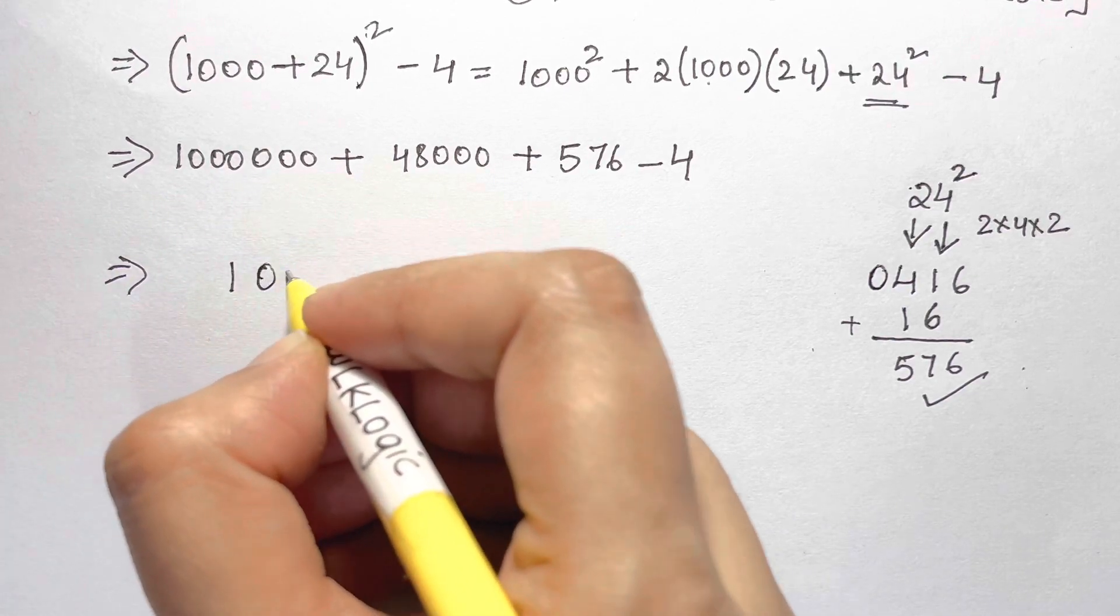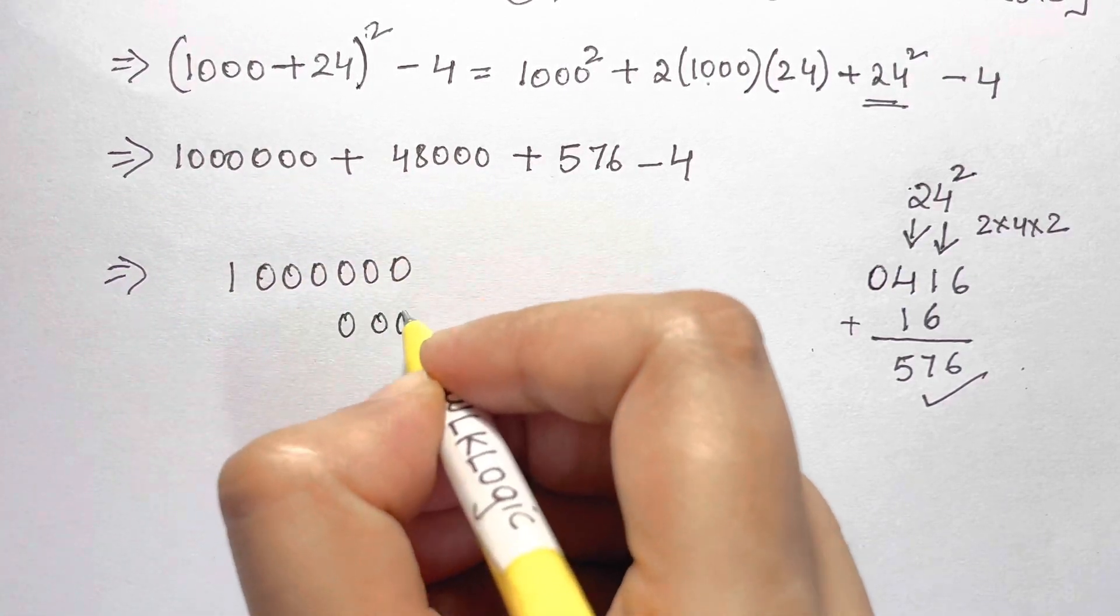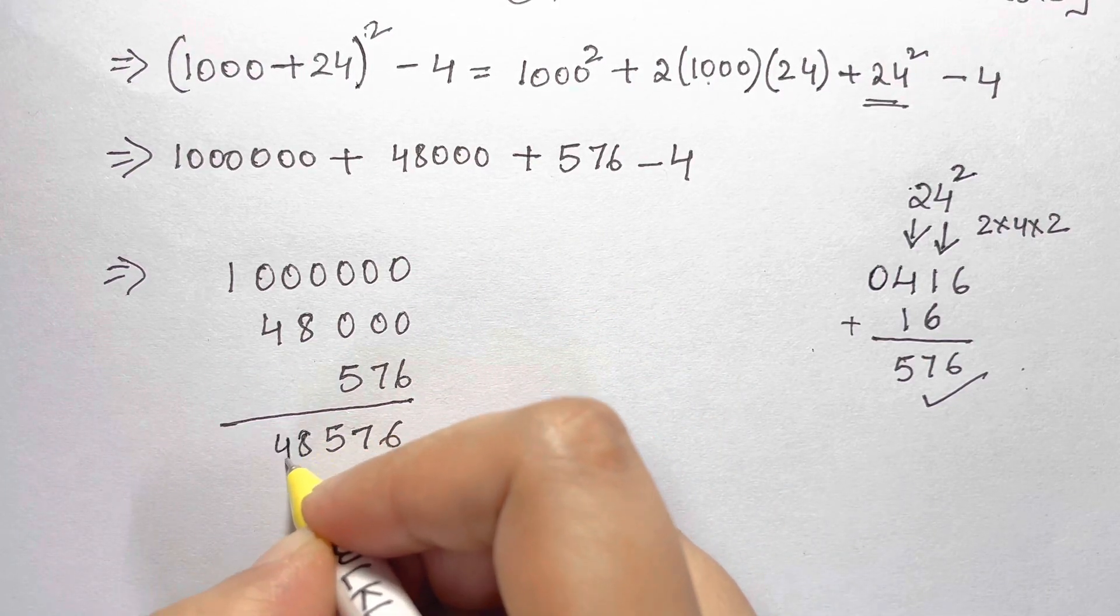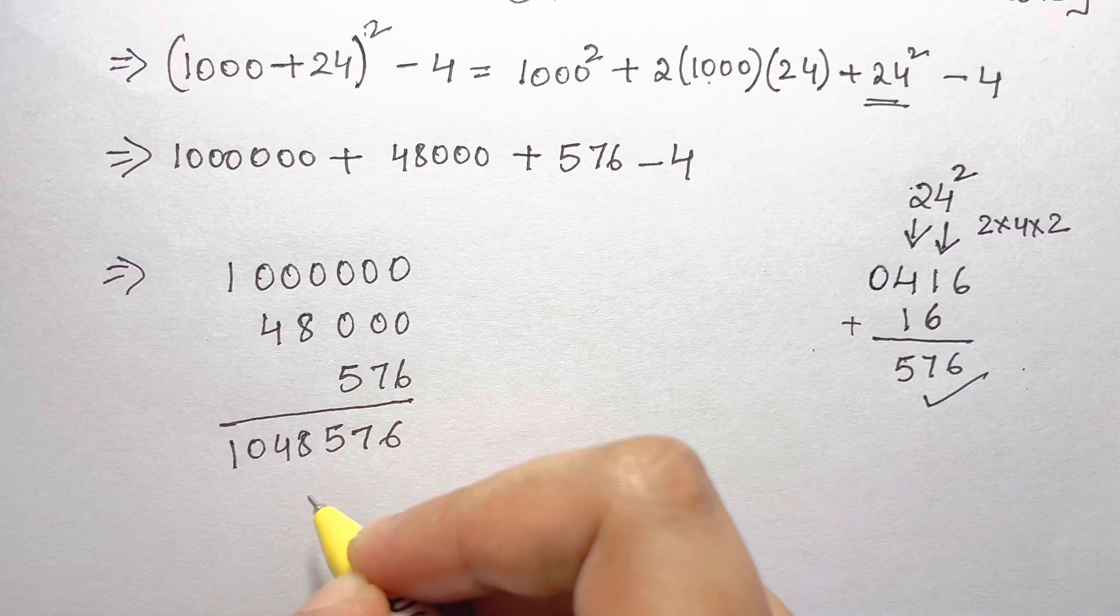Now let's just add them up all together. So we have 1 million plus 48,000 plus 576. That adds up and gives 1 million 48,576.